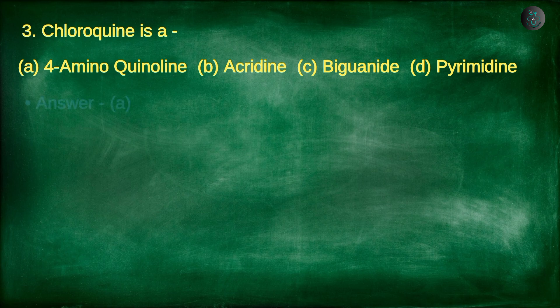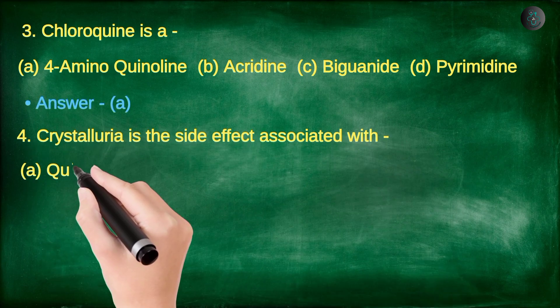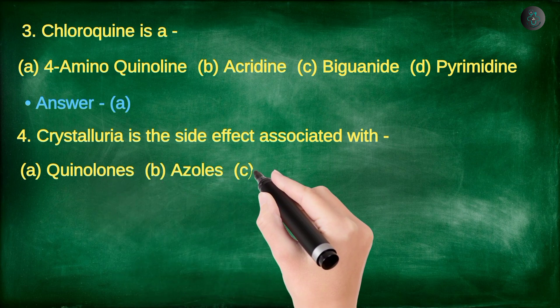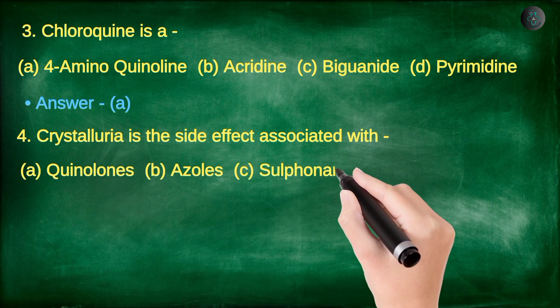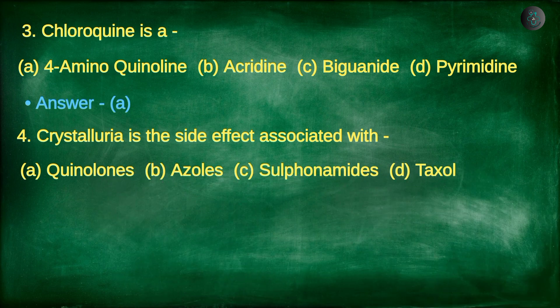Next question. Crystalluria is the side effect associated with: A. Quinolones, B. Azoles, C. Sulphonamides, D. Taxol.